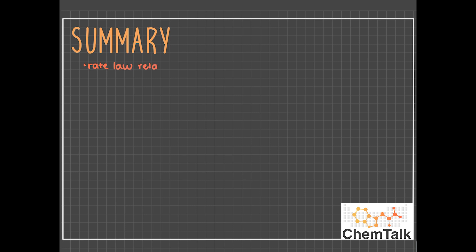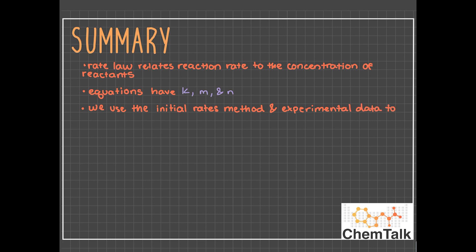Now before you go, let's recap what we covered today. Rate law equations relate reaction rate to the concentration of reactants. These equations have k, a constant, and a certain order for each reactant. We use the initial rate method and experimental data to determine the rate law for each reaction. And rate law is super helpful in determining the shelf life of foods and drugs.